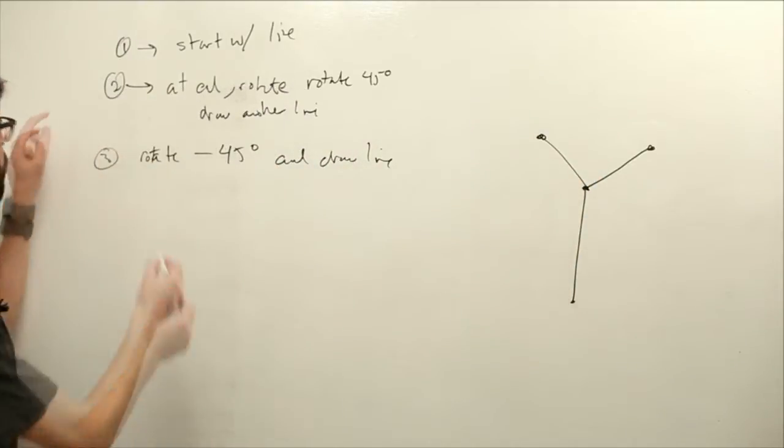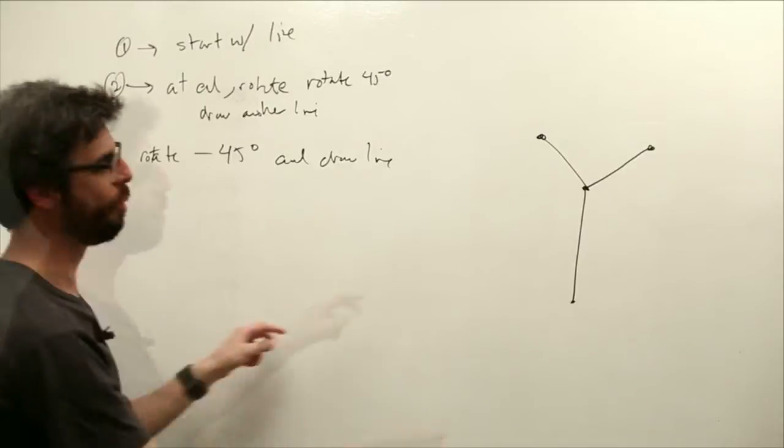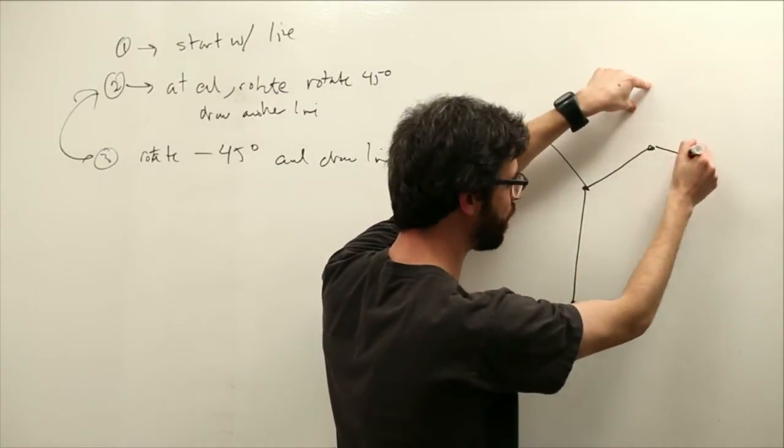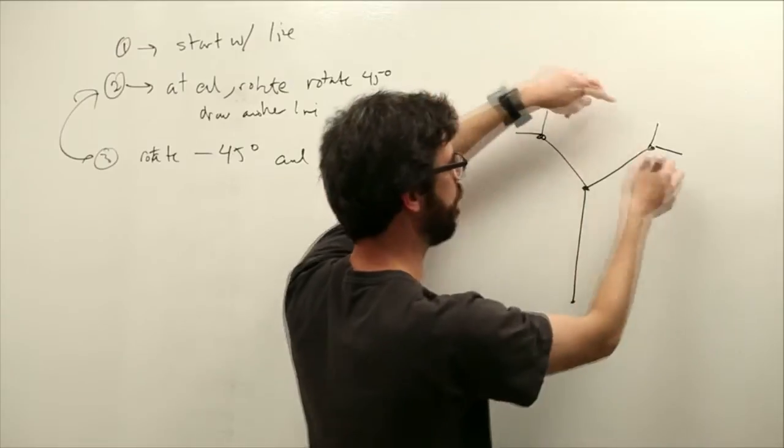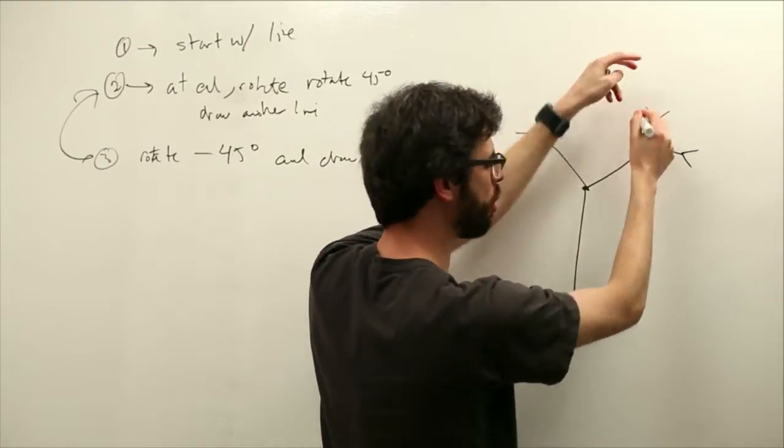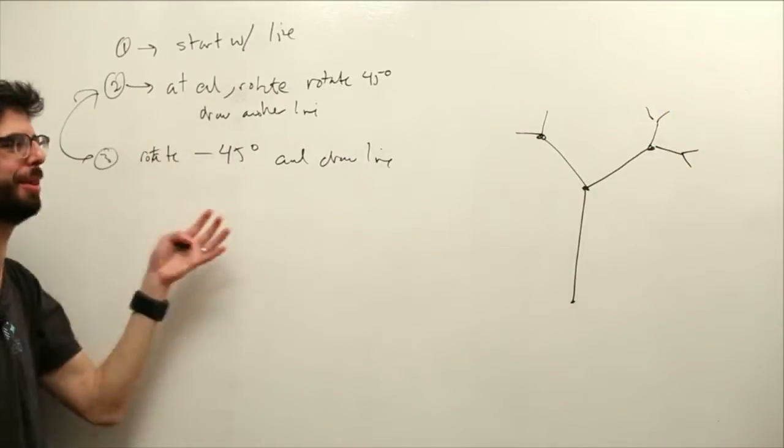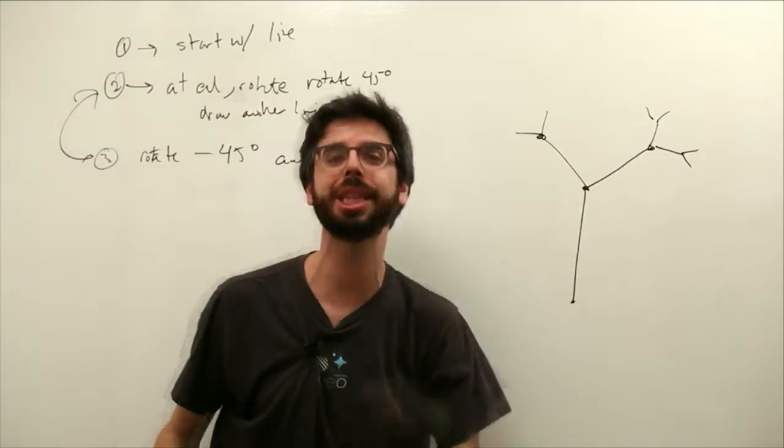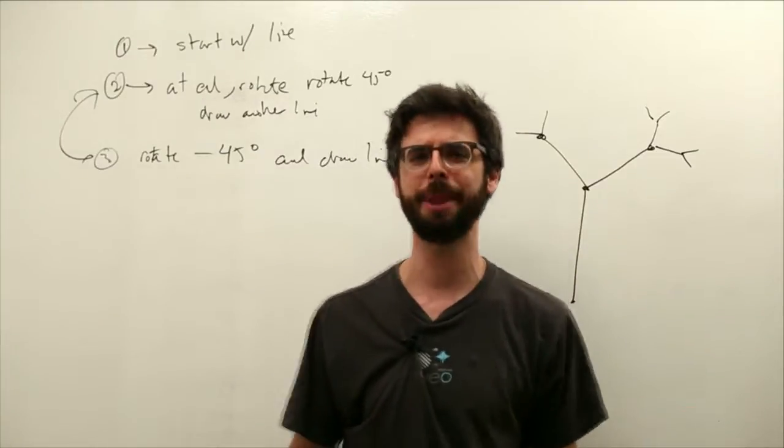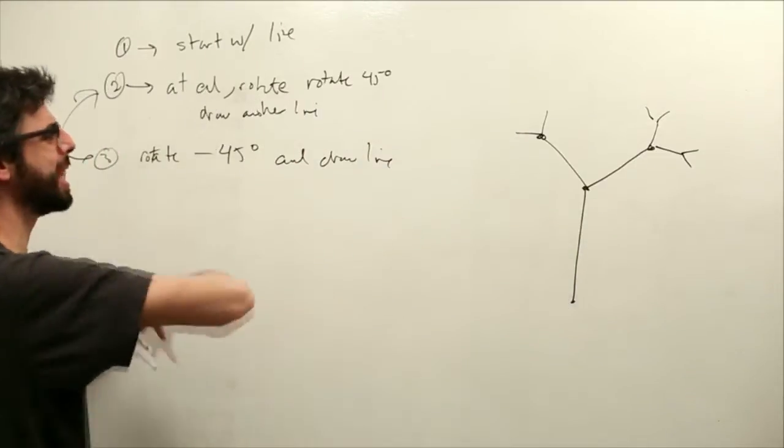Now for each, for two and three, we want to do the same thing. Go to the end, rotate 45 degrees and draw two lines. For each of these, rotate 45 degrees and draw two lines. The thing I missed in describing these production rules is also shrink the length of each branch each time. So you can start to see that this is the rule.